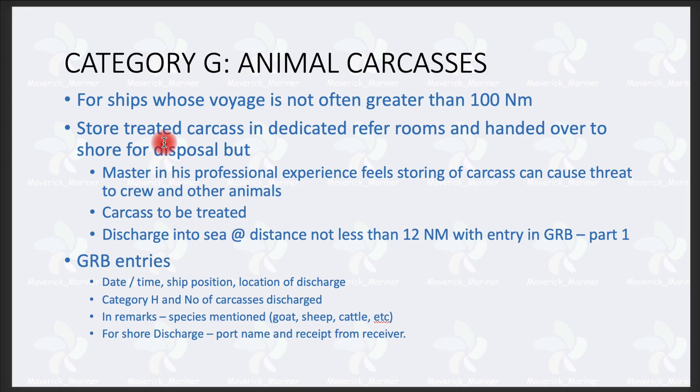But for example, if your refer room has space for fifty carcasses but the animals suffer disease, stampede, food shortage, or ventilation issues and sixty animals die, then the master in his professional experience, feeling that storing the carcass poses a threat to crew and other animals, may proceed as follows: the carcass will be treated — same split into two or passed through comminuter — but this time discharge into sea will be permitted at a distance not less than 12 nautical miles from nearest land, with entry in GRB Part 1.